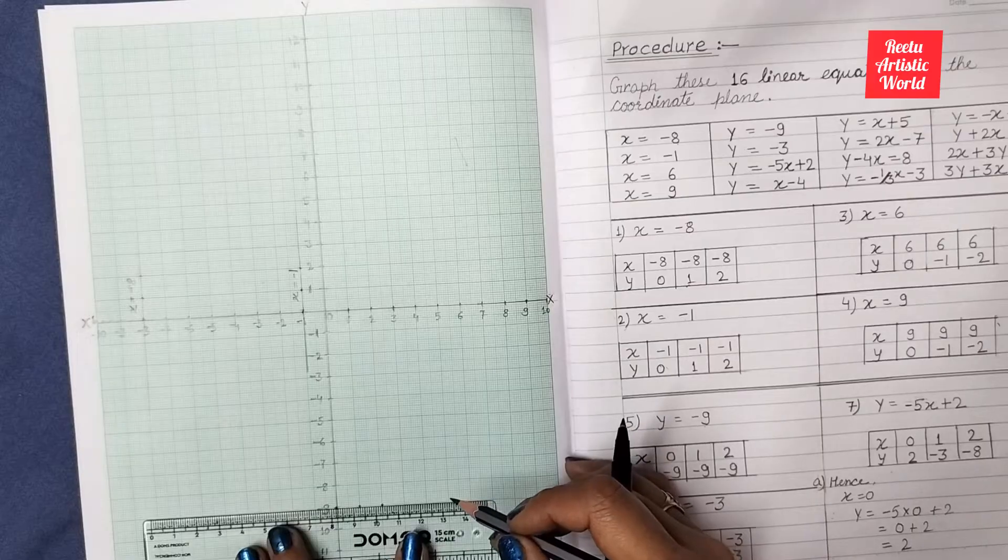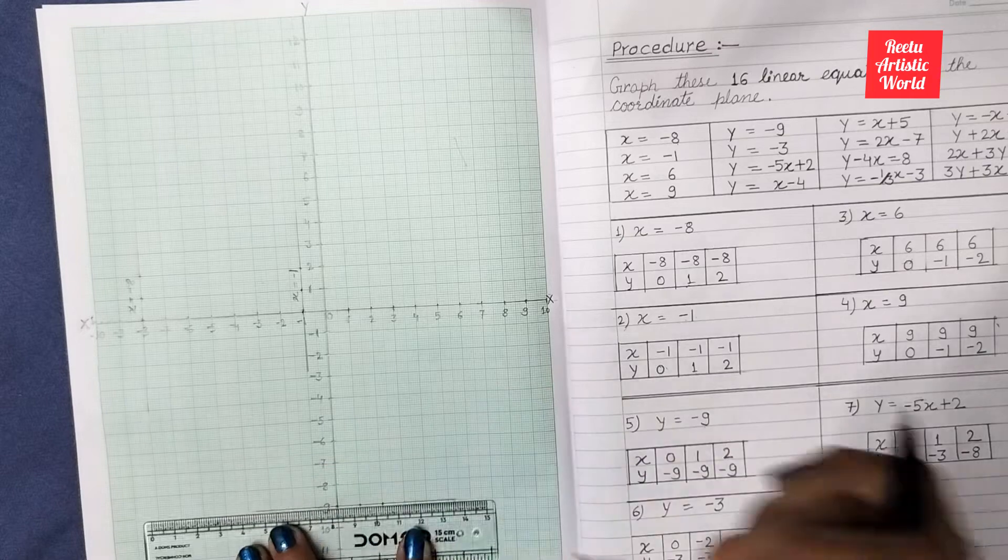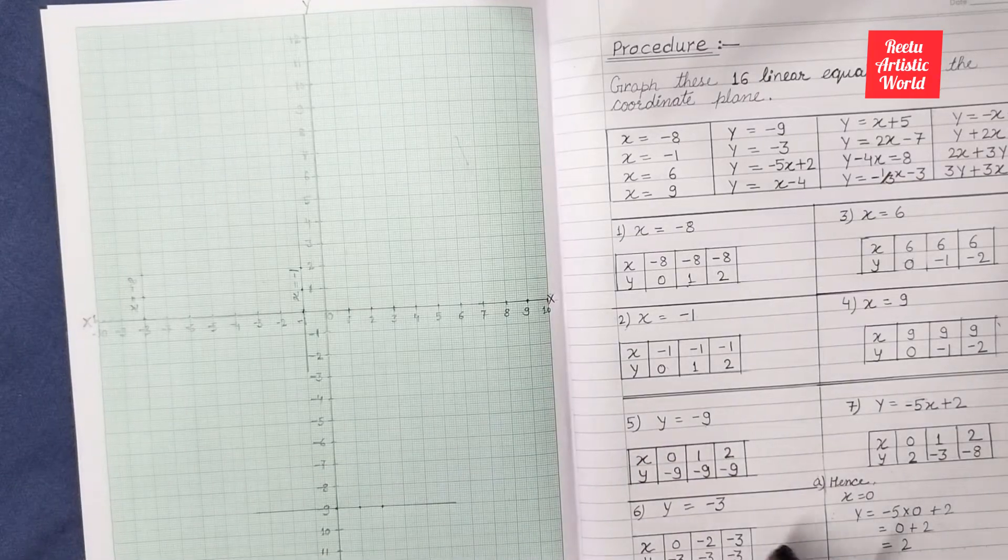As this line is parallel to x-axis, therefore there are infinite points of x for y is equal to minus 9.